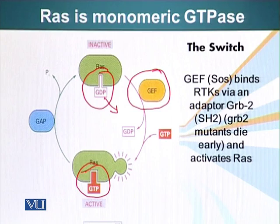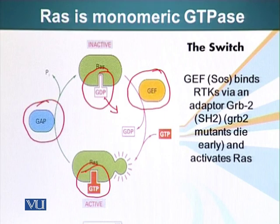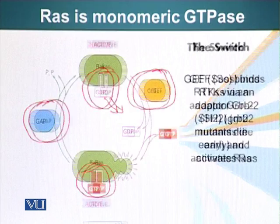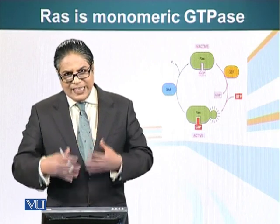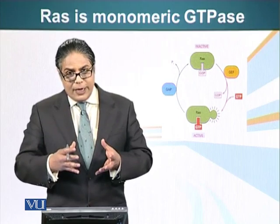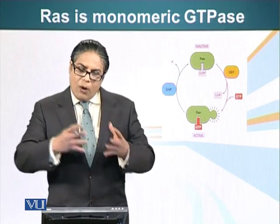Like all signaling molecules, it is very important to turn RAS off. G protein can hydrolyze GTP into GDP on its own and become inactive, but RAS does not have that ability. RAS needs help from another molecule called GAP — GTPase Activating Protein — which enhances RAS's intrinsic GTPase activity and causes it to hydrolyze GTP into GDP, returning the switch to the off state. RAS can thus exist in on and off states just like a switch, and we will look at how RAS communicates its active or inactive state in the next module.